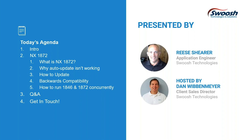Today we're going to present some information about when you update to NX1872, what to expect. There are some unexpected items coming up, and we thought it important enough to share those — what's coming in for support and what we're seeing internally. Today's agenda: we'll run through what's in the NX1872 release and why you may see errors when you do an update. We'll talk about compatibility and how to run 1846 and 1872 concurrently.